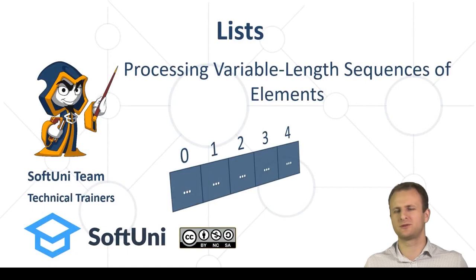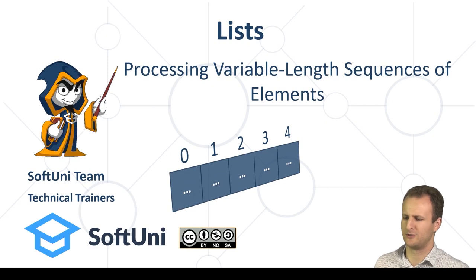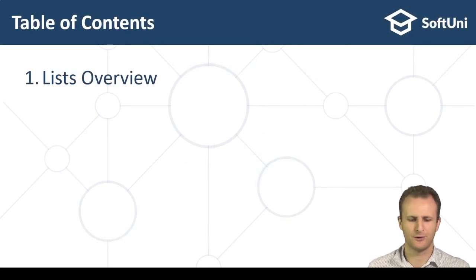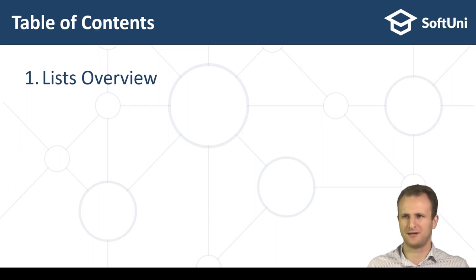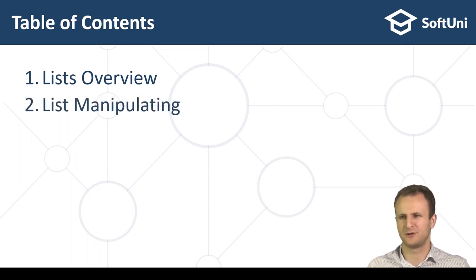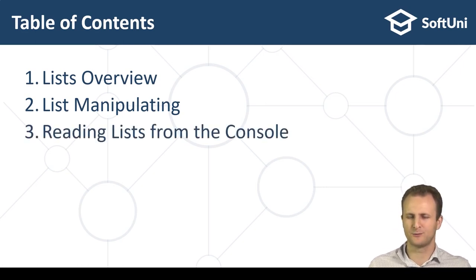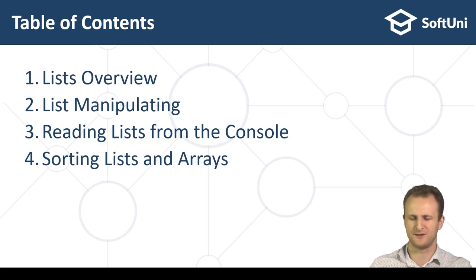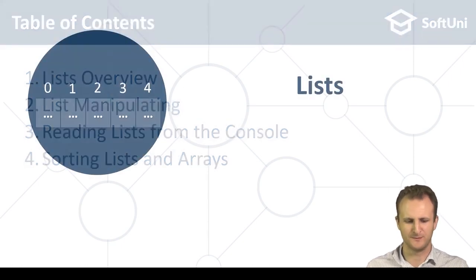So what are we going to talk about today? We're going to talk about lists. Lists are just a variation of arrays which allow us to do some neat stuff. We'll see what lists are as an overview, their functions, how to modify them, what they have in common with arrays, how to manipulate them — remove elements, resize them — how to read and print lists from the console, and a new topic: what sorting is and how we can do it to lists and arrays.